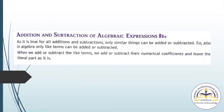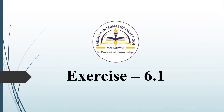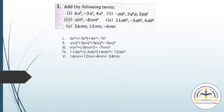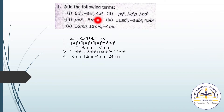Now we will see addition and subtraction of algebraic expressions in Exercise No. 6.1, Question No. 1: Add the following terms. First: 6x², −3x², and 4x².